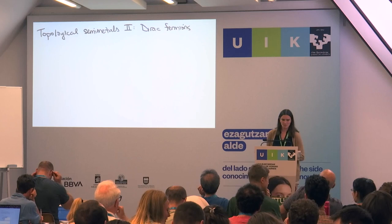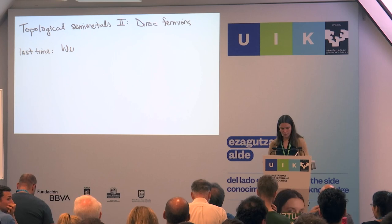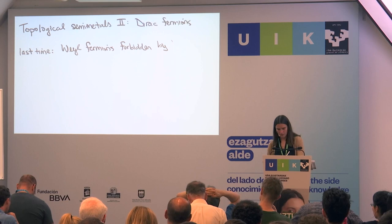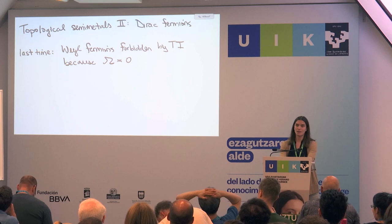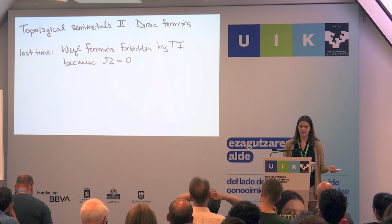So I want to pick up where we left off yesterday. Last time, what we were talking about was how Weyl fermions are forbidden by the product of time reversal and inversion symmetry, and the reason for that is because Berry curvature vanishes in this situation. What I want to talk about today is what are the types of symmetry-protected band crossings that you can have with time reversal and inversion symmetry, and then more generally give an overview of how you would classify symmetry-protected band crossings.